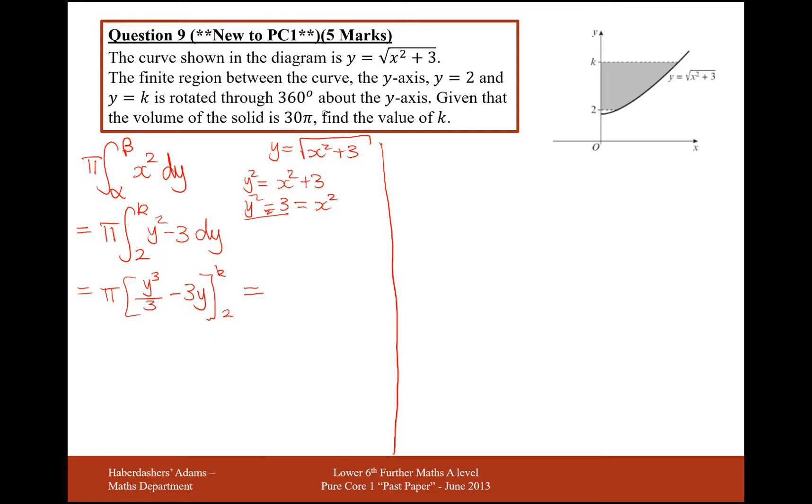Now this answer we're told in the question here is 30 pi. So from here onwards, I'm going to be cancelling out these pi's here and here on both sides. And we need to work out k. So let's substitute in k and two and subtract both the terms from each other. So k cubed over three minus three lots of k. And then we subtract two substituted in. So two cubed over three minus three lots of two. And this will equal 30.